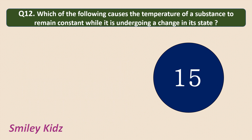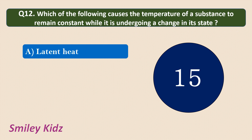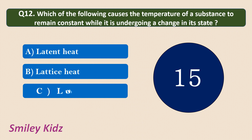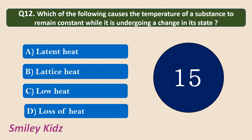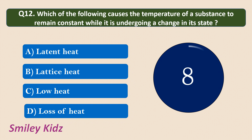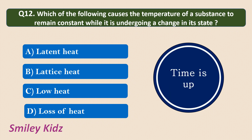Question number 12. Which of the following causes the temperature of a substance to remain constant while it is undergoing a change in its state? Options are: latent heat, lattice heat, low heat, or loss of heat. The correct answer is latent heat. Latent heat is the hidden heat in an object, which causes the temperature to remain constant during a change of state.